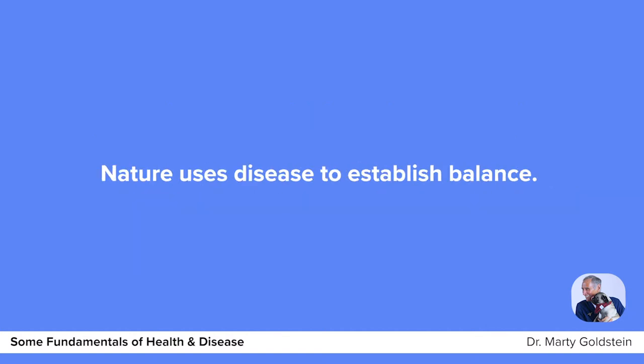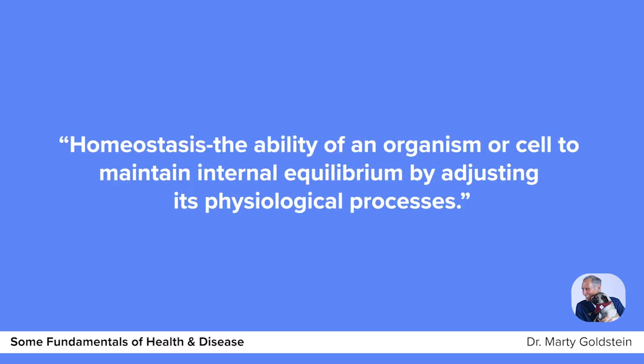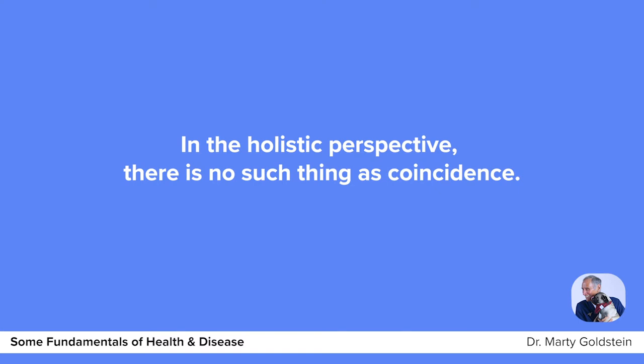Nature uses disease to establish balance. Only when our bodies are out of balance are we subject to disease. Homeostasis — the ability of an organism or cell to maintain internal equilibrium by adjusting its physiological processes. And when the body reestablishes homeostasis, it creates signs or symptoms of illness or disease. And very importantly, in a holistic perspective, there is no such thing as coincidence.